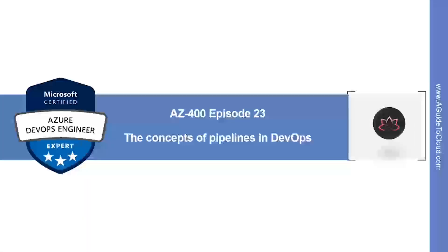Hey, welcome back. In this episode, we're going to learn about the concept of pipelines in DevOps, which includes build automation and continuous integration, test automation, deployment automation, etc. My name is Sushant Suthish and I'm your trainer for this AZ400 Azure DevOps Engineer Certification course. So without wasting any more time, let's get into it.